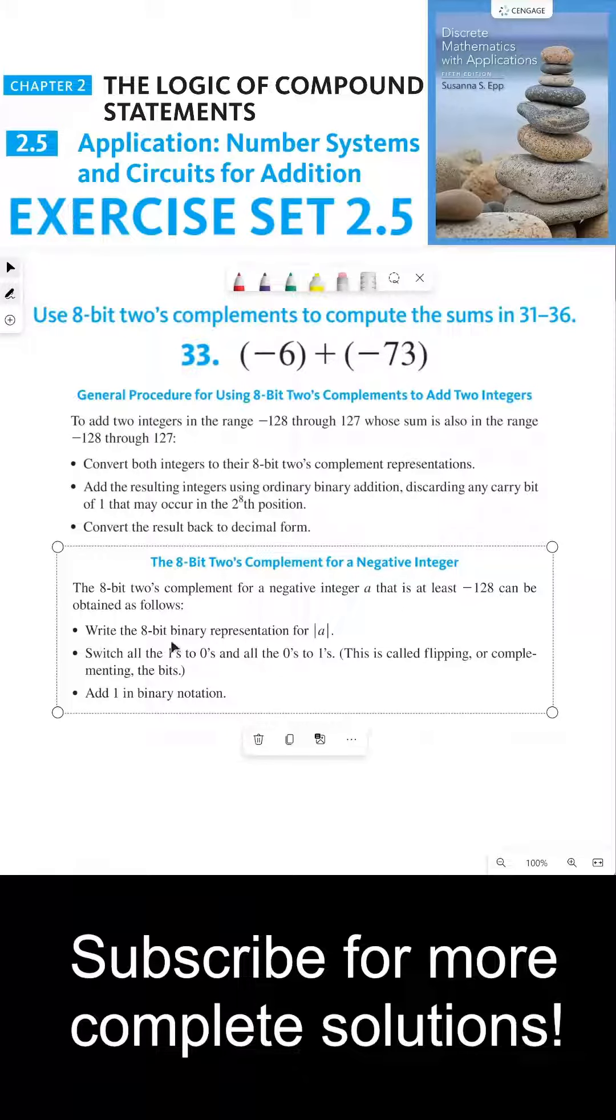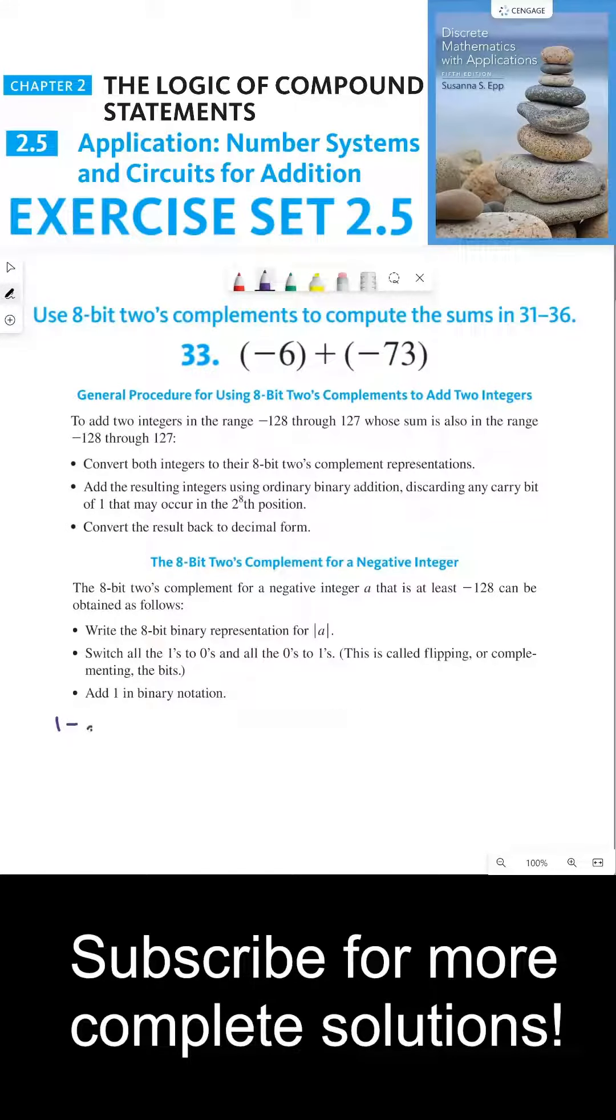To find the 8-bit 2's complement for a negative integer, first write the 8-bit binary representation for the absolute value of these two numbers. The absolute value of negative 6 is 6, which in 8-bit binary is 00000110. The absolute value of negative 73 is 73, which is 01001001 in binary representation.